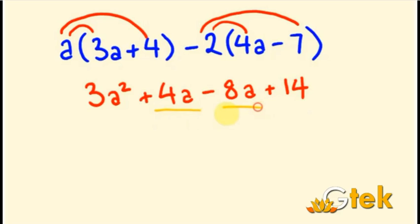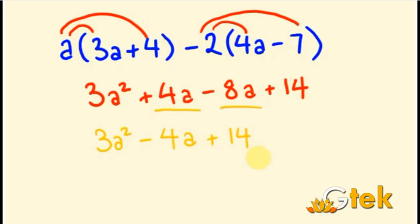But I have the same coefficient remaining — 4a minus 8a — so I have to simplify it. So 3a squared, then 4a minus 8a: the bigger number has the minus symbol, so it gives minus 4a. Therefore the final answer is 3a squared minus 4a plus 14. That's the end of the session, thank you.